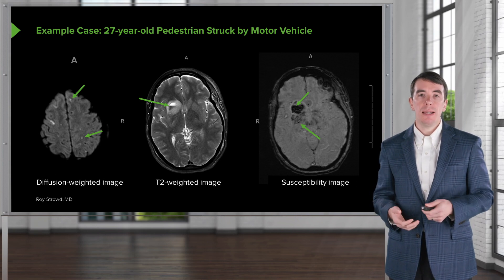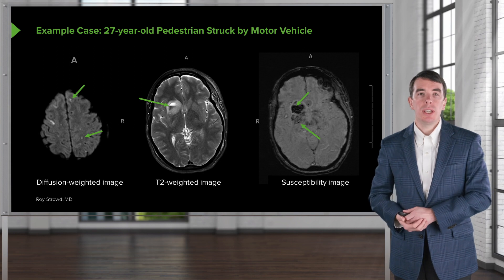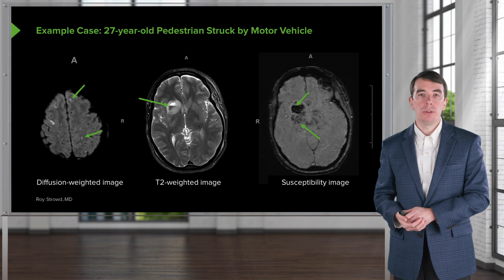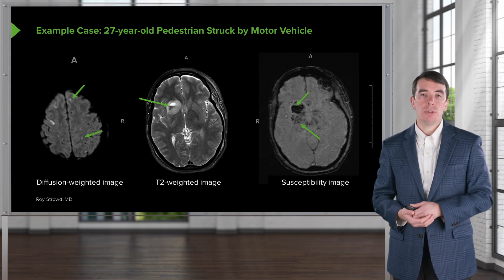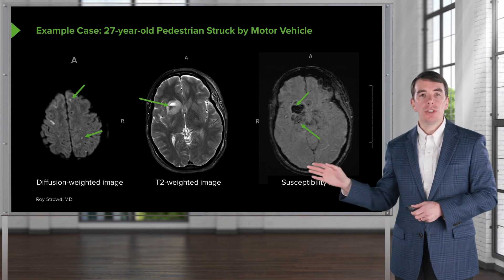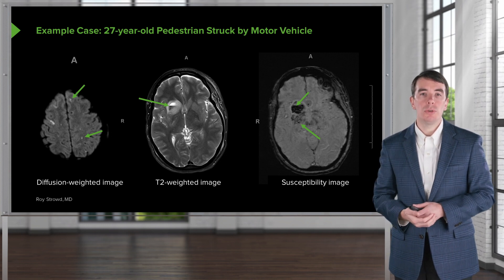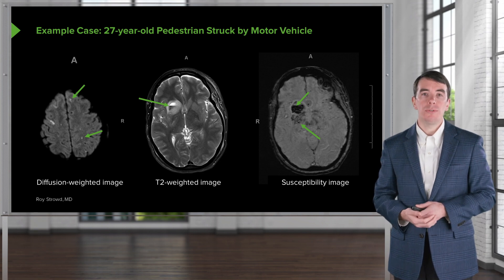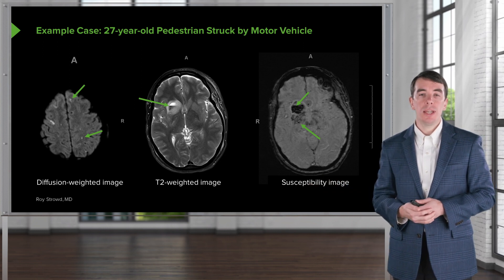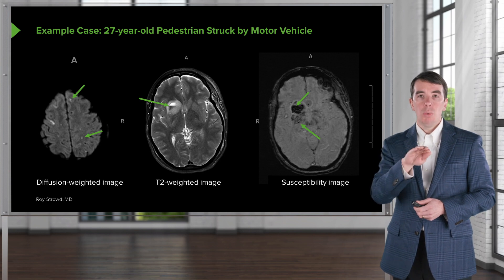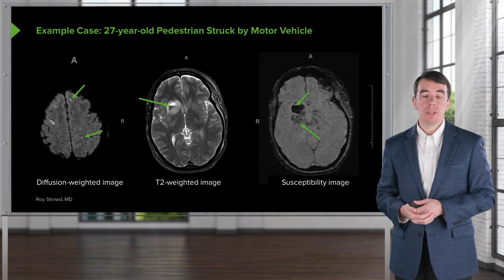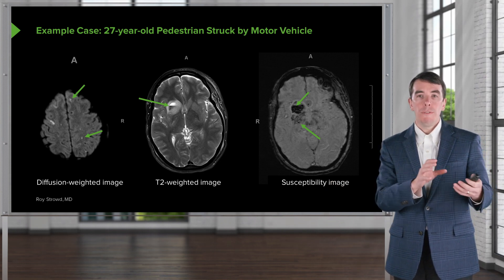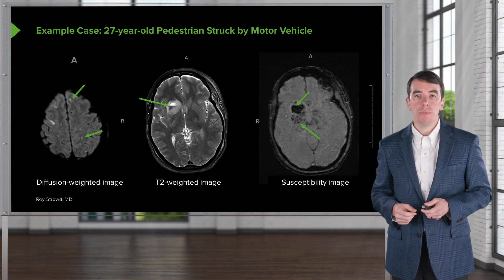Here is a case example showing both focal and diffuse traumatic injuries: a 27-year-old pedestrian struck by a motor vehicle, seen on a series of MRIs. On the left, the diffusion-weighted image shows cytotoxic edema — swollen cells from loss of the sodium-potassium ATPase — appearing as multiple small punctate foci of restricted diffusion at the gray-white junction, consistent with diffuse axonal injury. In the middle, the T2-weighted image shows a lesion deep within the caudate body and basal ganglia with a fluid level, representing hemorrhage from a subcortical contusion. On the right, the susceptibility-weighted image confirms the area of hemorrhage.